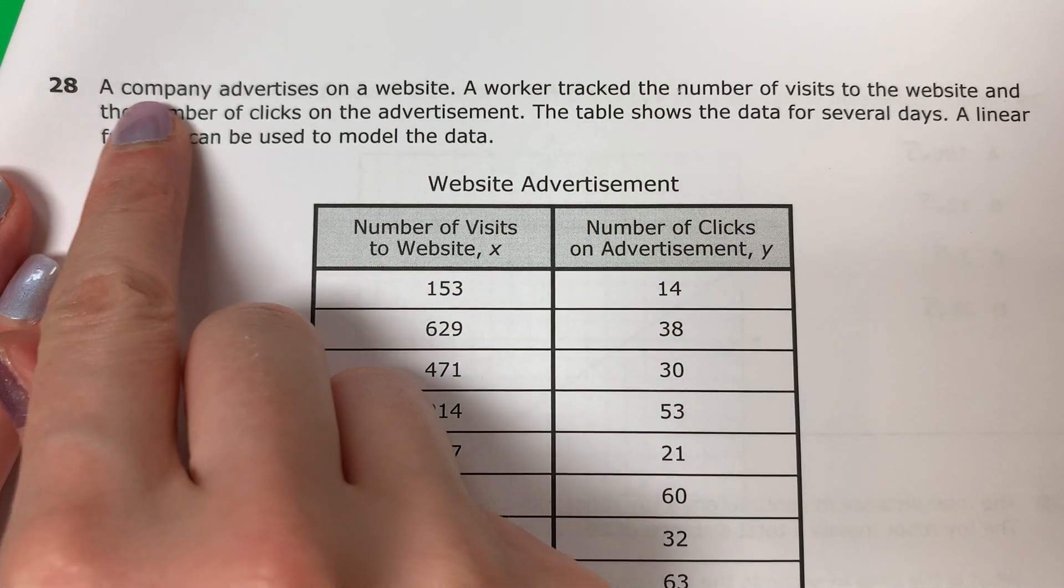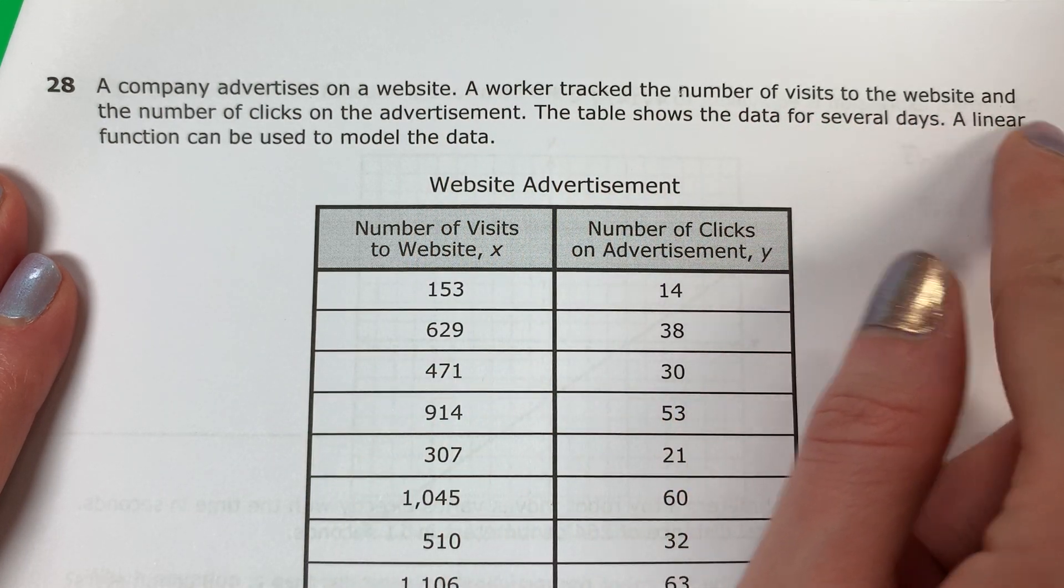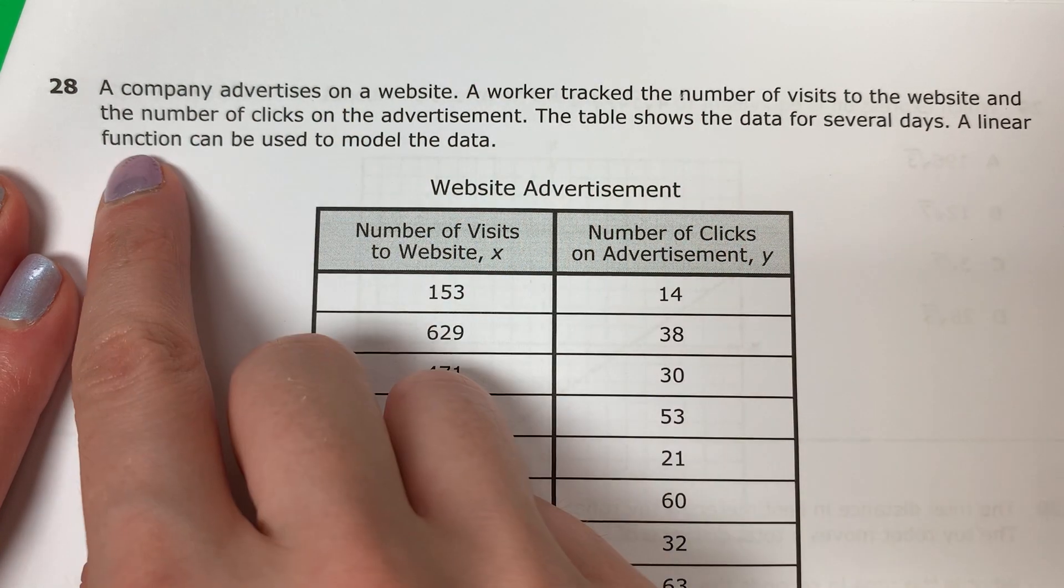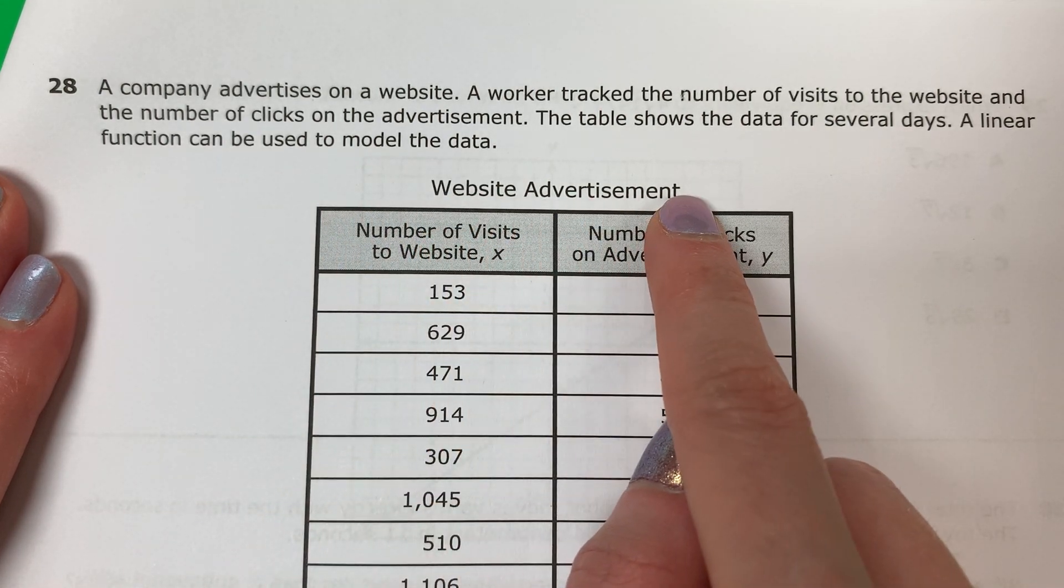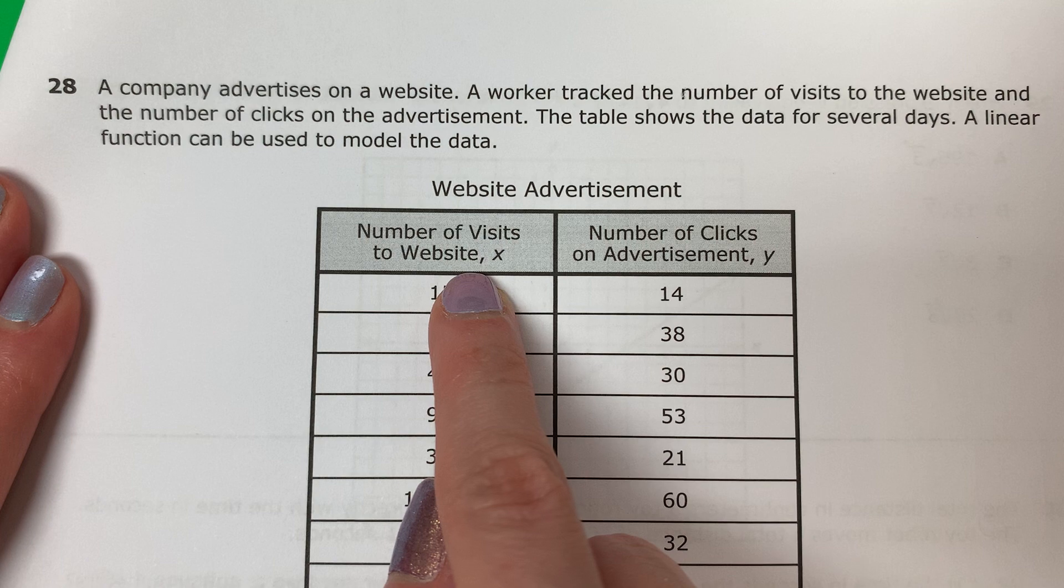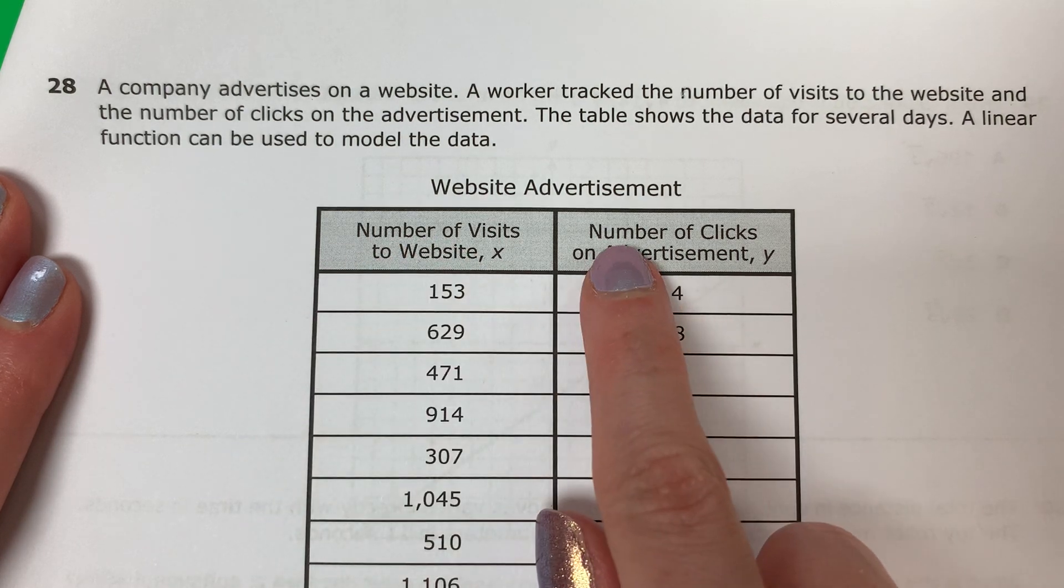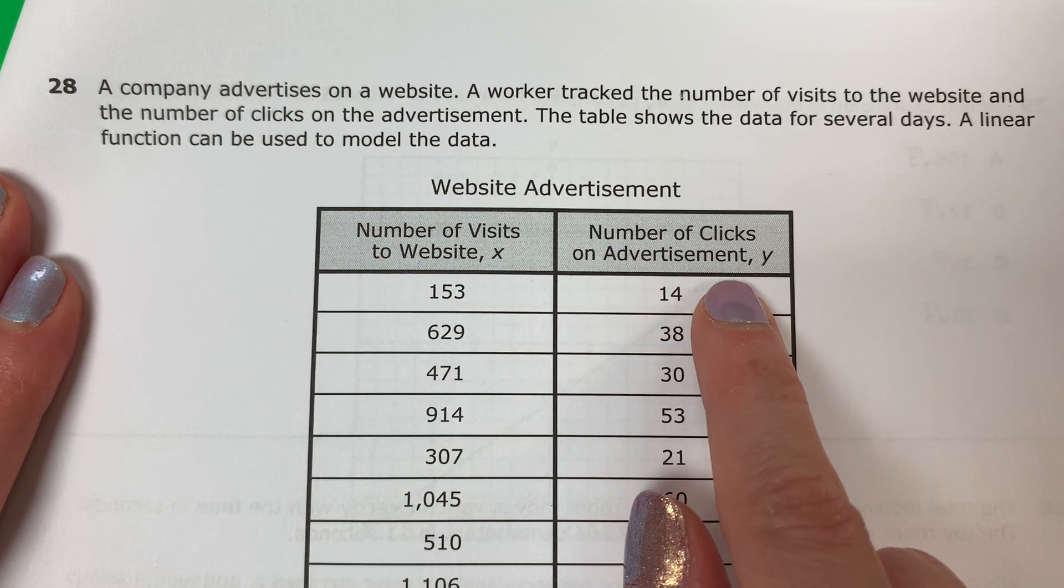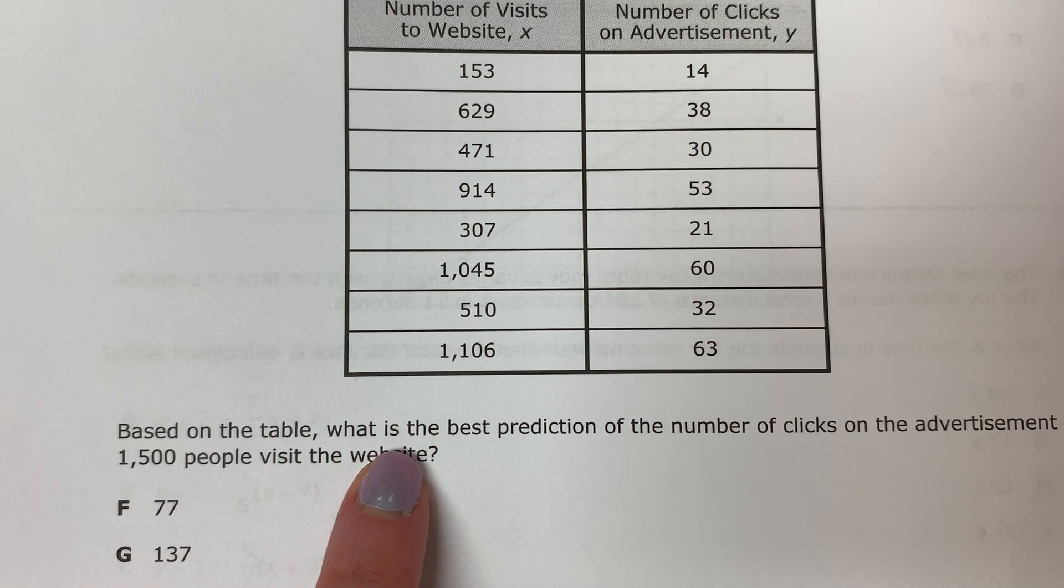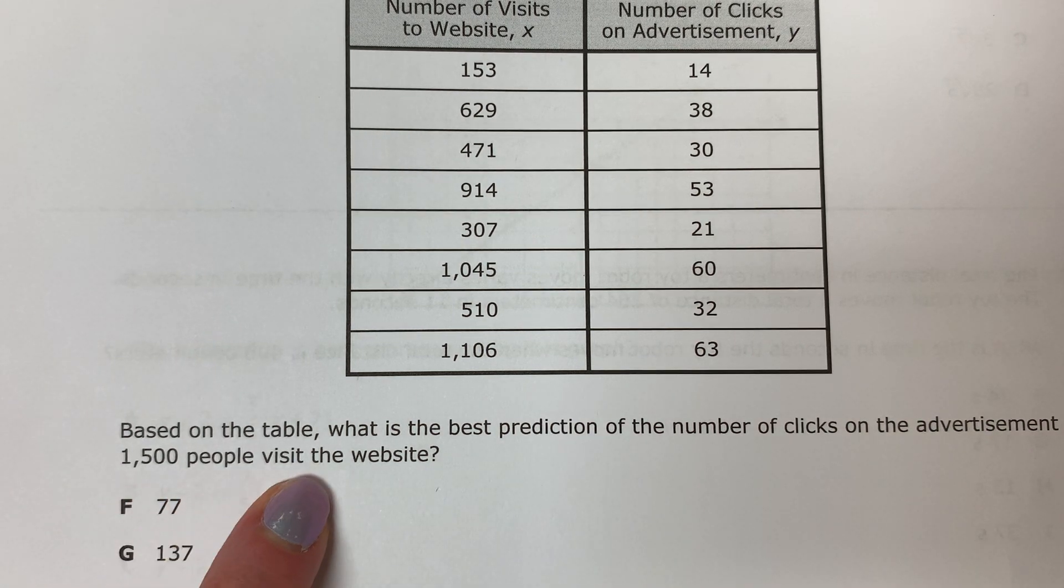Question 28. A company advertises on a website. A worker tracked the number of visits to the website and the number of clicks on the advertisement. The table shows the data for several days. A linear function can be used to model the data. Based on the table, what is the best prediction of the number of clicks on the advertisement if 1,500 people visited the website?